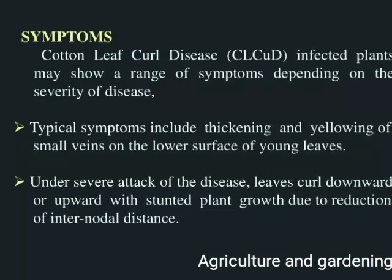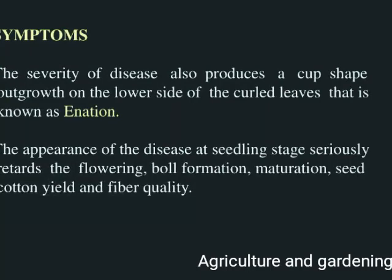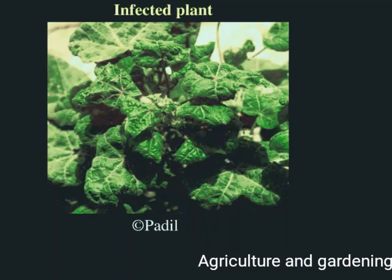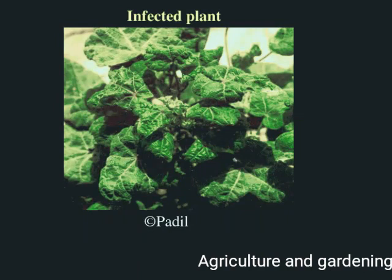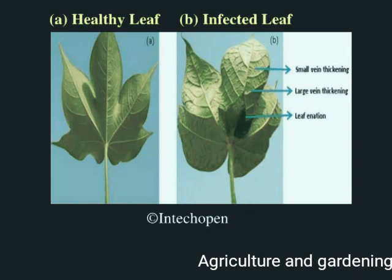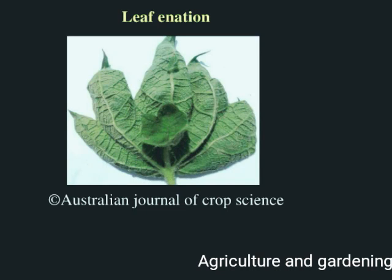Typically, symptoms include thickening and yellowing of small veins on the lower surface of young leaves. Under severe conditions, the leaves curl downward or upward and growth is stunted. Severity also causes serious effects on infected plants, retarding boll formation and flowering, and affecting fiber quality.